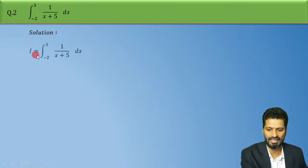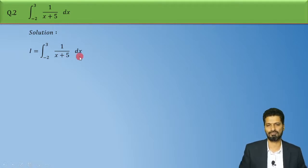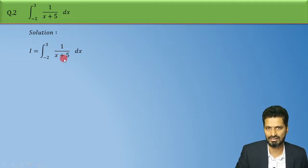So we have I equals to integral minus 2 to 3, 1 upon x plus 5 dx. Ab isko integrate karne ke liye humko sirf yeh check karna hai ke yeh jo function hai yeh kis standard formulae ke saath match kar raha hai, right.